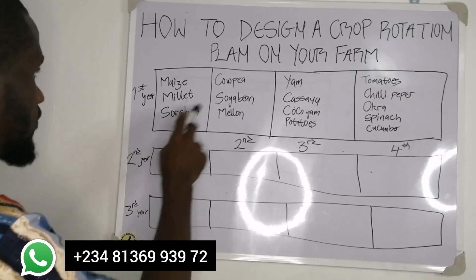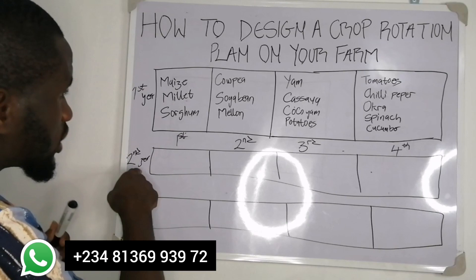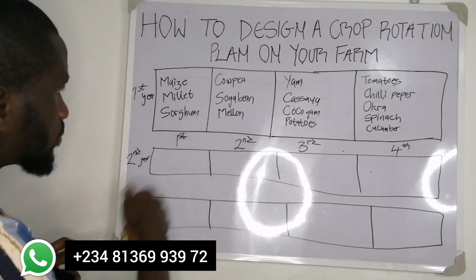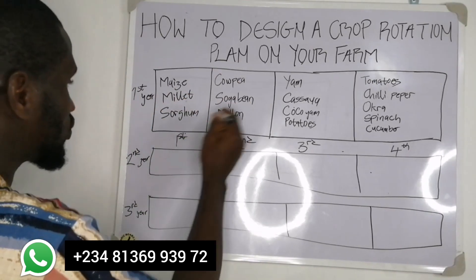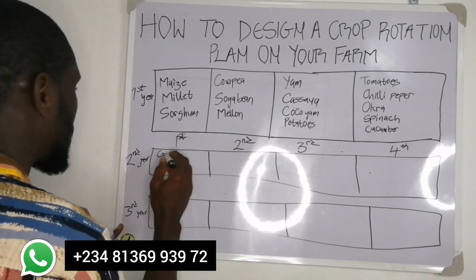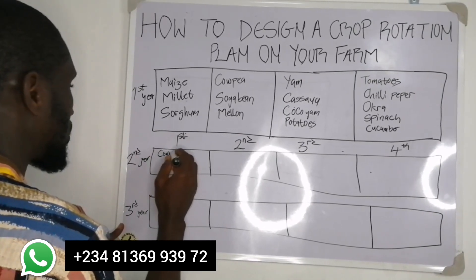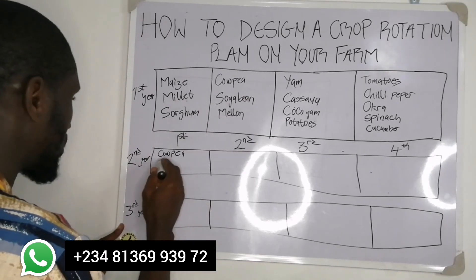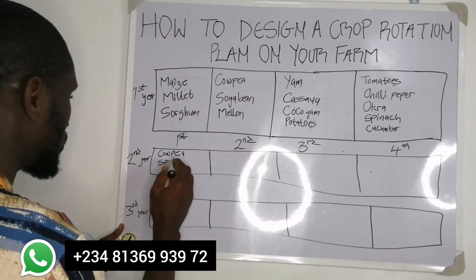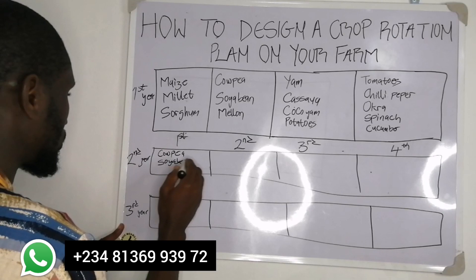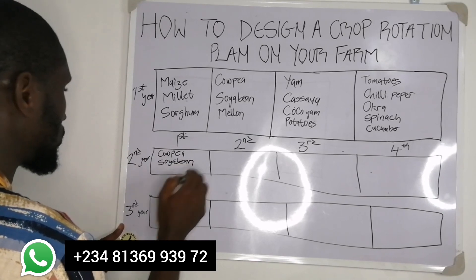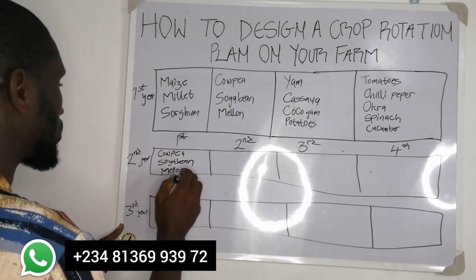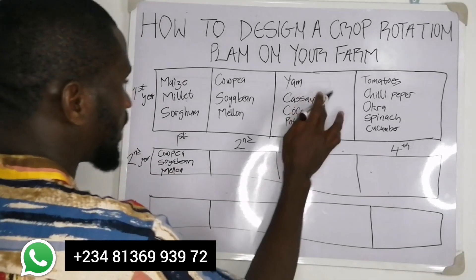In the second year, on the first plot you will not be planting maize, millet, or sorghum. What you will be planting will now be cowpea, soya bean, or melon — the leguminous crops that were previously on plot two.